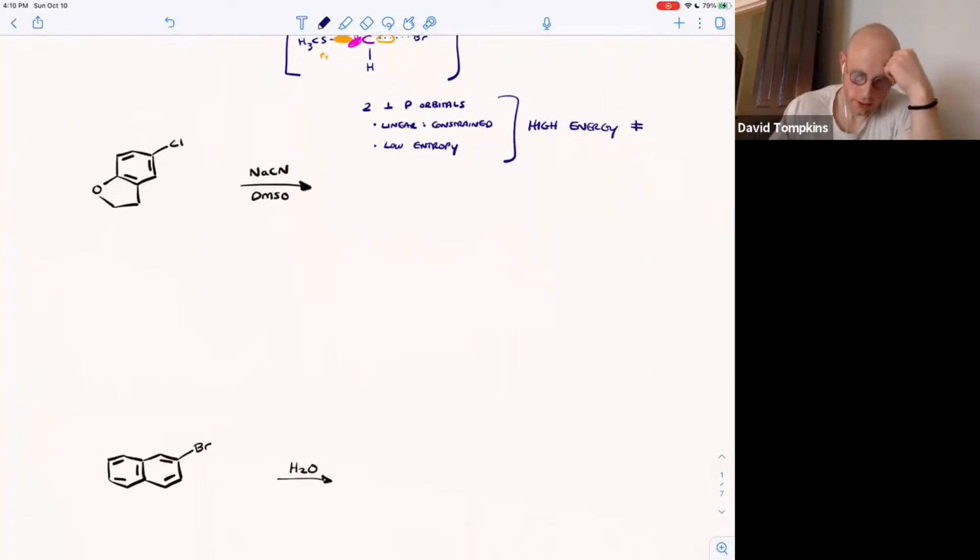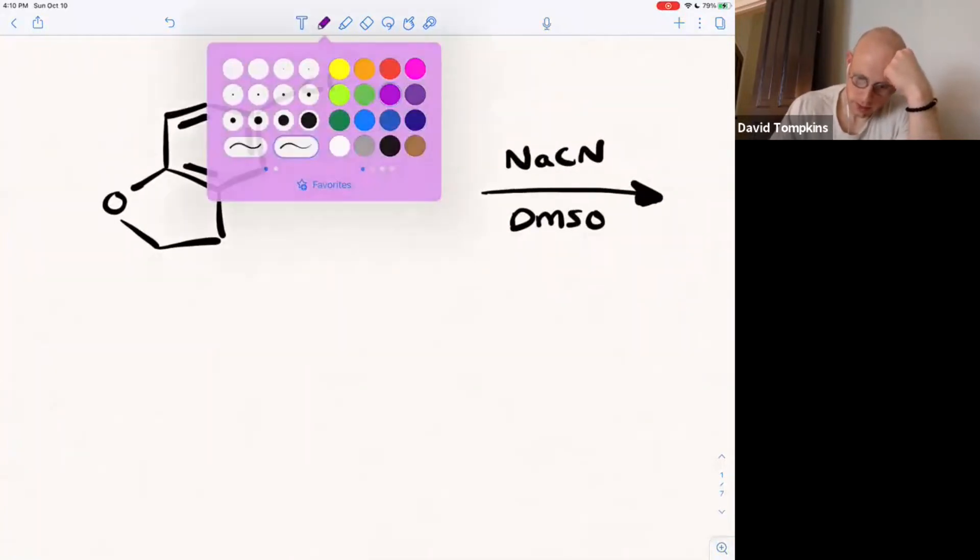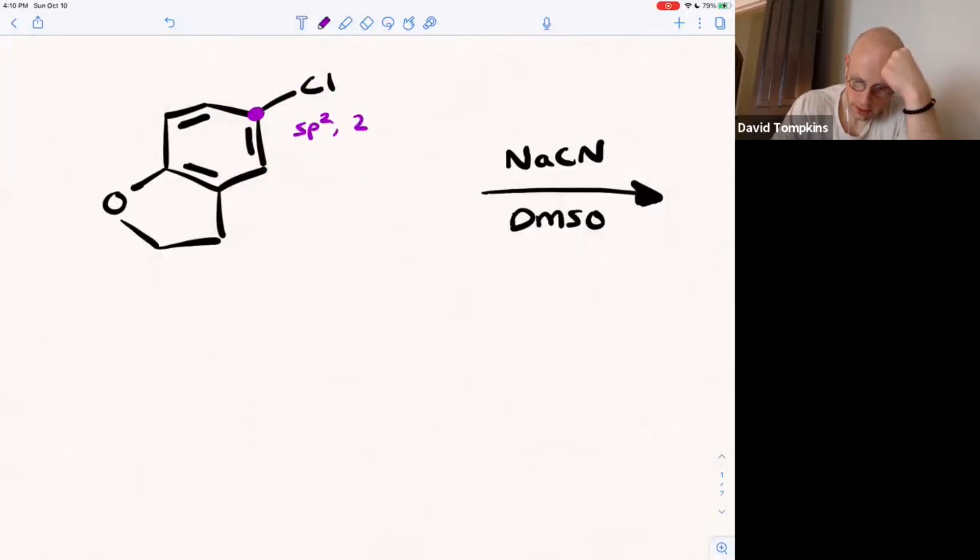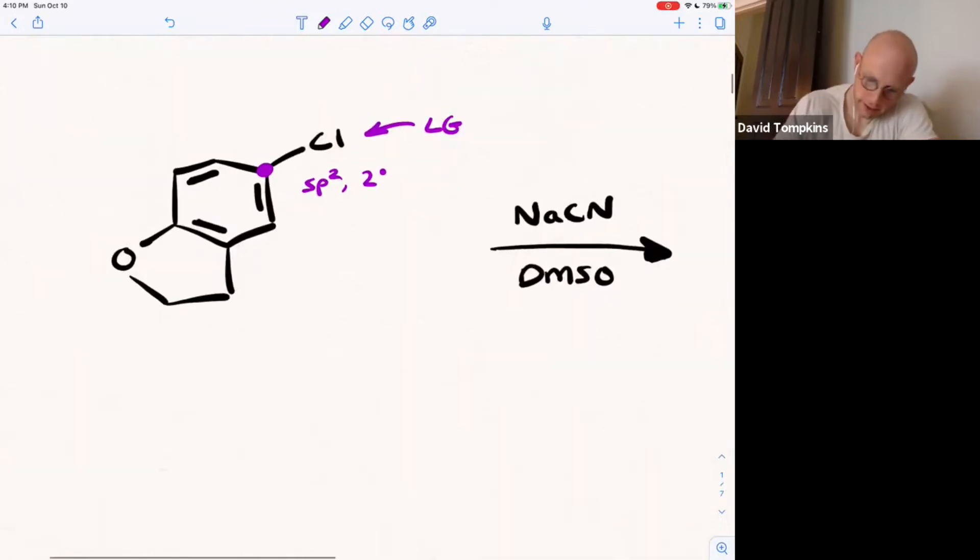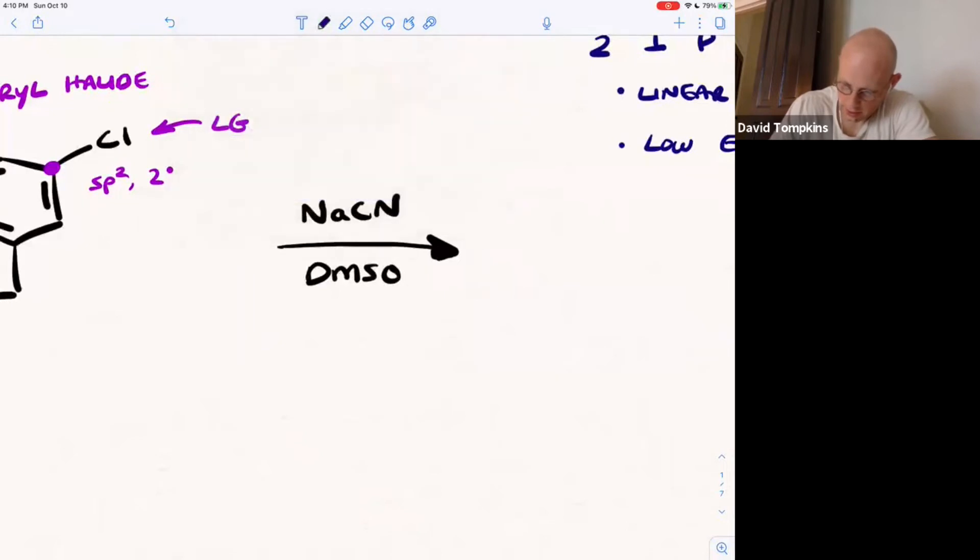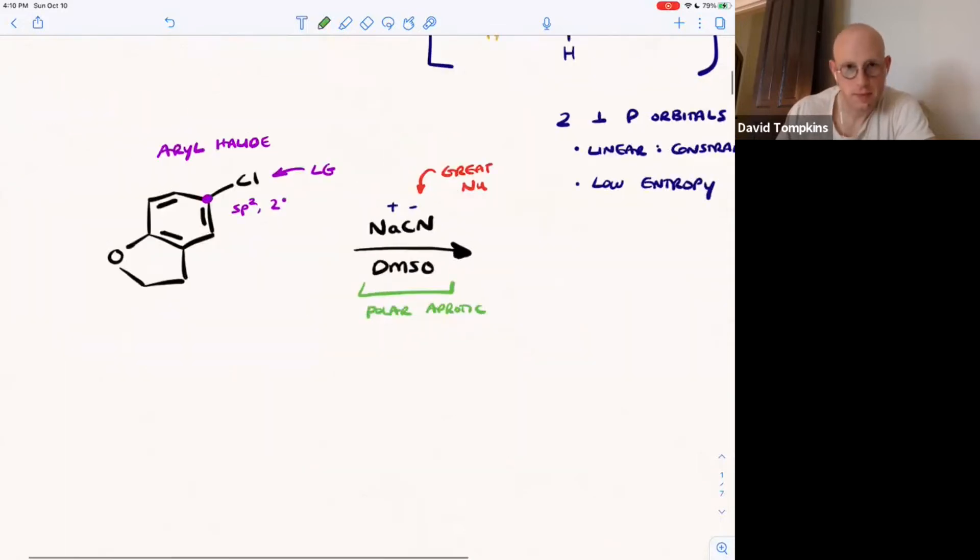So another example would be for an aryl halide. This one is also sp2 hybridized at carbon. It's secondary. It has a good leaving group, chloride. We're treating that aryl halide with a different nucleophile this time. The nucleophile is sodium cyanide, another ionic compound, whereas cyanide is a great nucleophile. And it generally loves to attack and displace a leaving group through SN2. Once again, DMSO is a polar aprotic solvent. So this looks like a recipe for SN2.